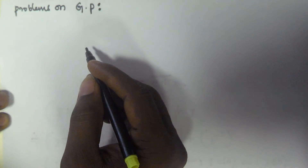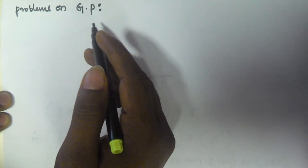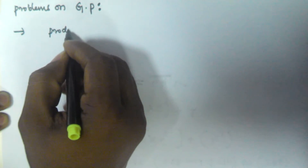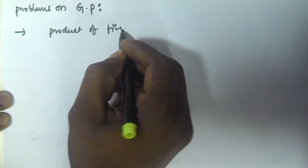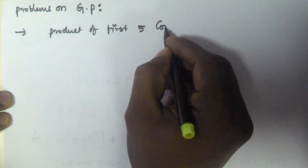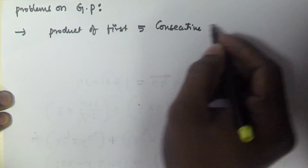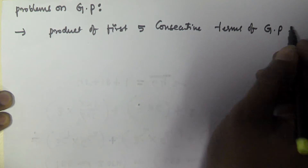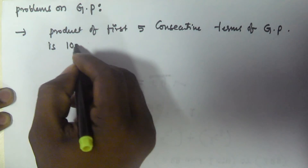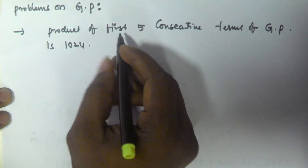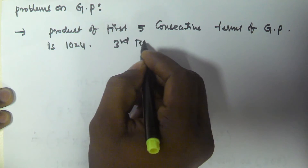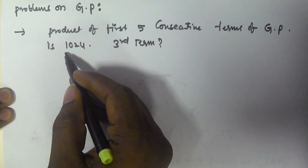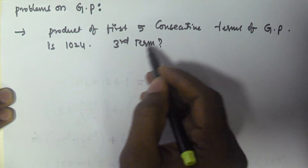Hello friends, in this video we will see some problems based on geometric progression. The first problem is: if the product of first five consecutive terms of a geometric progression is 1024, we have to find the third term.